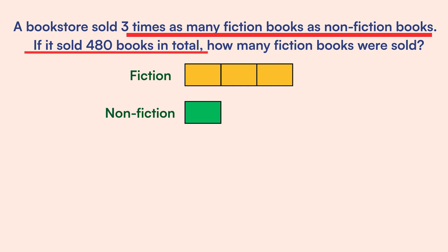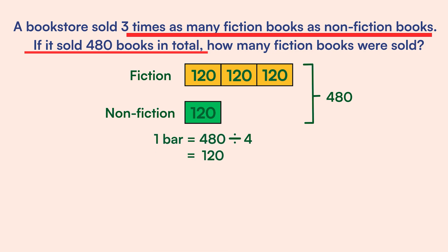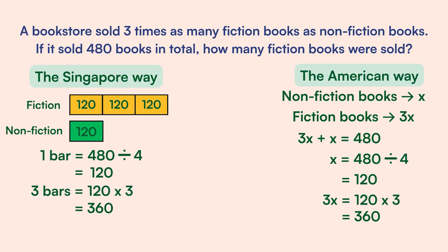It's important to know that these 4 bars for both fiction and non-fiction books are equal in quantity. We also know that a total of 480 books were sold, so we can say that our 4 bars equal 480 books, which means 1 bar equals 480 divided by 4, which is 120. To find the number of fiction books, we need the quantity of 3 bars, which is 120 times 3, giving us 360. If we compare these two solutions, the steps are practically the same. In other words, third graders in Singapore are practicing basic algebraic thinking without knowing they are doing algebra.